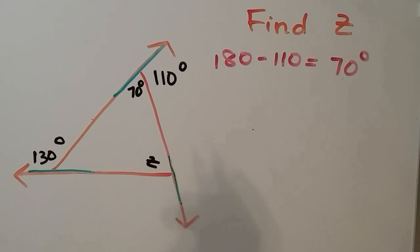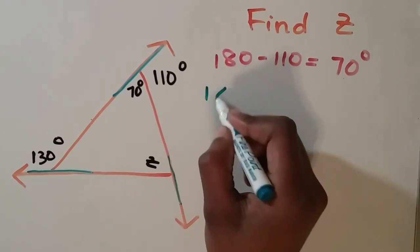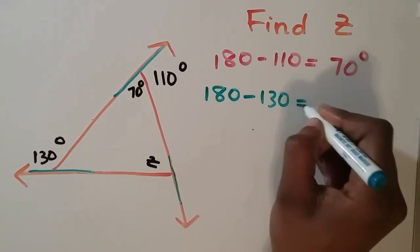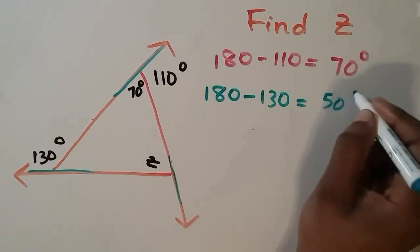To find our second interior angle, we do the same thing. We subtract 130 from 180, and we get 50 degrees.